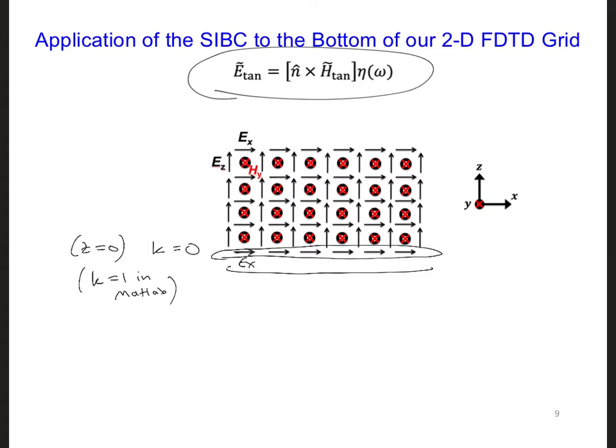But to use this equation to solve for the EX fields, we need the tangential magnetic field along the surface of the ground. But because the field components are offset by half a cell here, we don't have a magnetic field along the surface of the ground. So what should we do? The only magnetic field we have in the grid is an HY. So we'll have to use the HY that is a half of a cell above the ground as an approximation for the magnetic field at the surface of the ground.